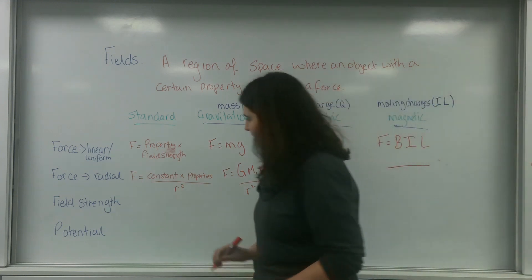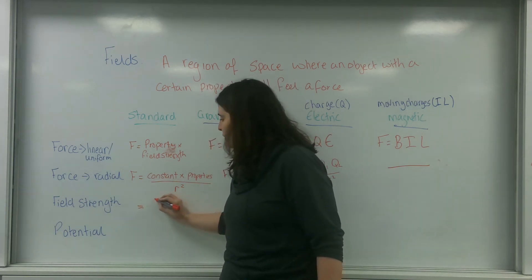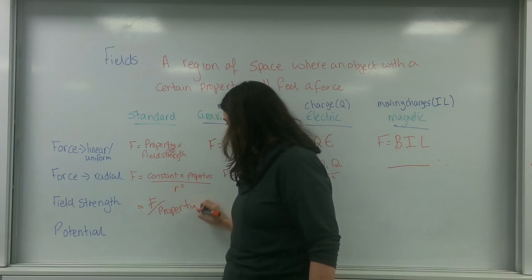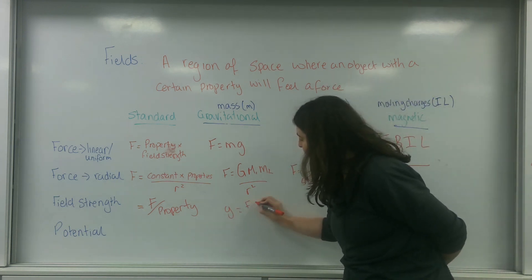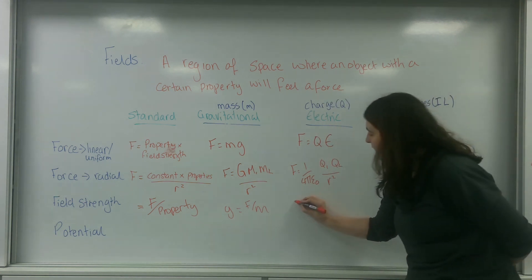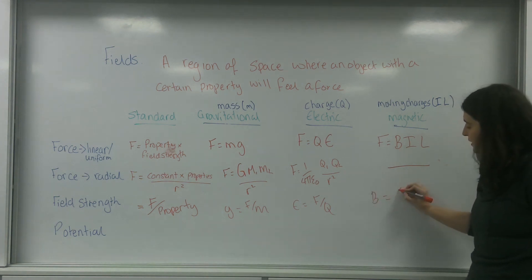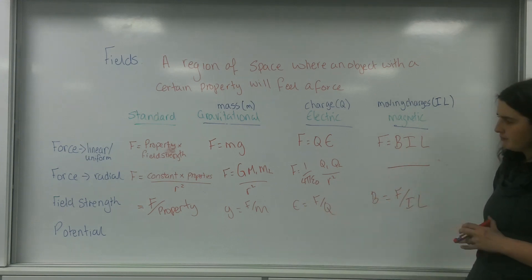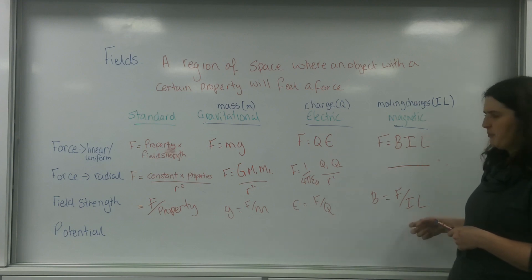Field strength equals force over the property. So G equals F over M for gravitational fields, E equals F over Q for electric fields, and B equals F over IL for magnetic fields. Force is on top, property of the material on the bottom. They like asking for the equation for field strength for magnetic fields.